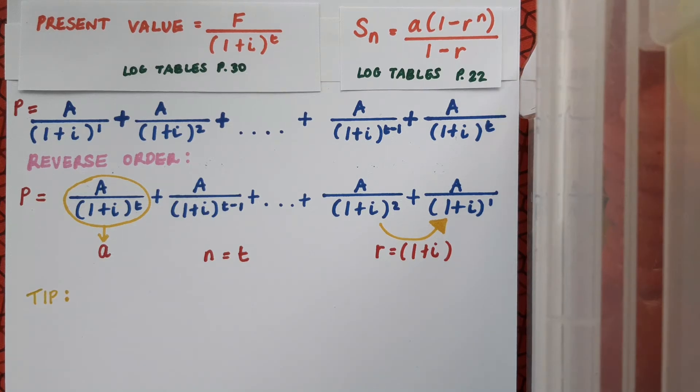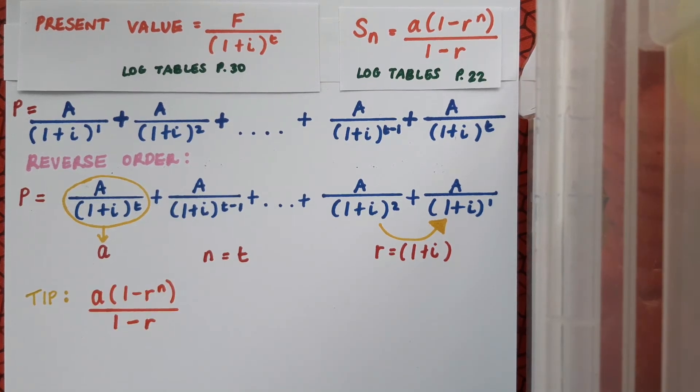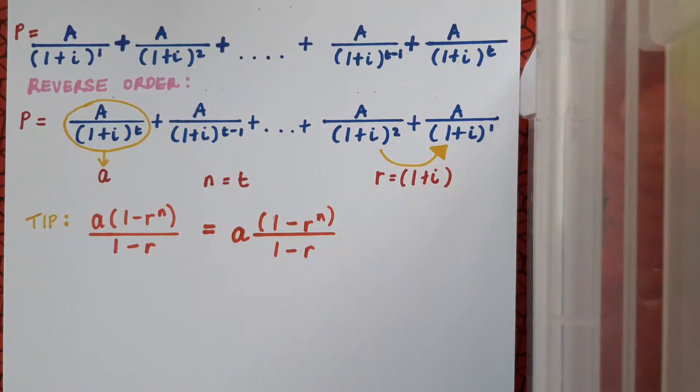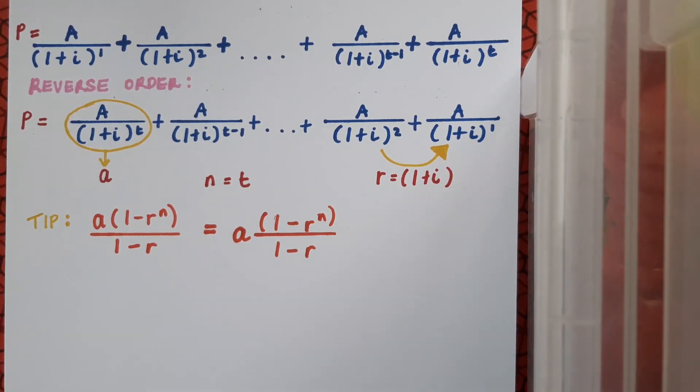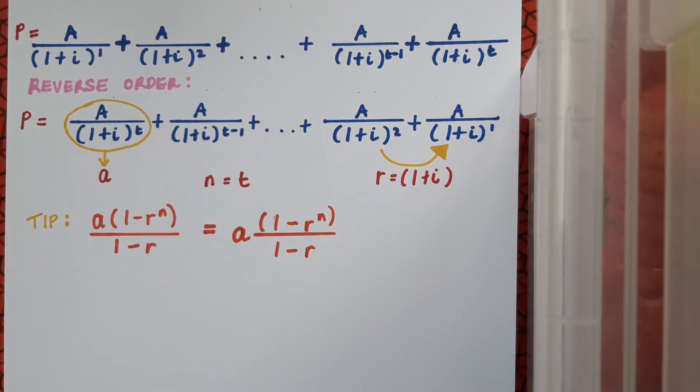A quick tip before we start. The formula that we're using for the sum of the geometric series can be written as A times 1 minus R to the N over 1 minus R. And this, believe it or not, will actually make it significantly easier to manipulate what I end up with for the sum of my series and to make it look more like the amortization formula. So again, I highly recommend doing this. Okay, so let's start subbing in then.